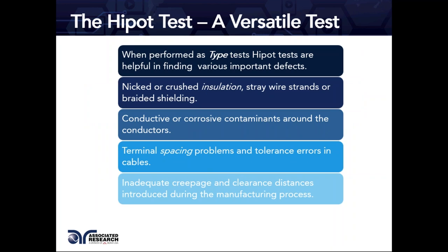The Hypot test does more than check end-user safety — it gives designers good information about product quality. As a type test during the engineering phase, the Hypot test verifies insulation quality and finds important defects such as nicked or crushed insulation, stray wire strands or braided shielding, and conductive or corrosive contaminants around conductors.